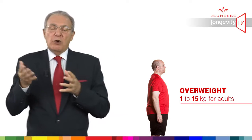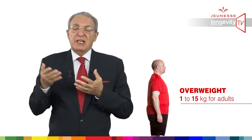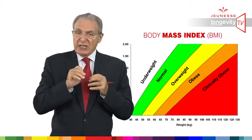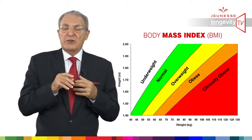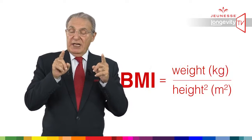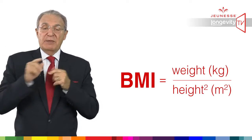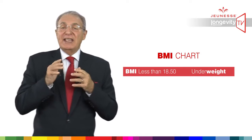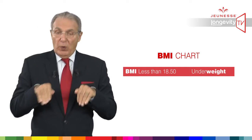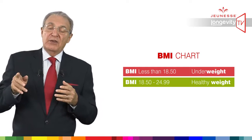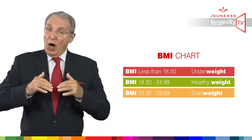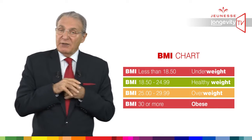Overweight means that you have gained only a few kilos above standard — from 1 to 15 kilos for adults. Above this threshold you are considered obese. If you wish to get more detailed information, you can calculate your BMI, which means your body mass index, using the following formula: your weight in kilograms divided by your height in square meters. If your BMI is under 18.5, you are underweight. Between 18.5 and 25 is normal. Between 25 and 30 is overweight. Above 30 qualifies as obesity.